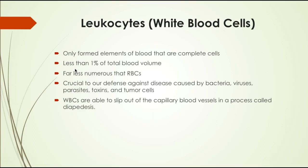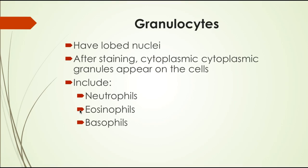Leukocytes are white blood cells — the only formed elements of blood considered to be complete cells. They make less than 1% of the total blood volume and are very important for defense against disease, bacteria, parasites, toxins, and tumor cells. Unlike other blood components, white blood cells can leave the bloodstream, travel to tissues in different parts of the body, and return. There are two categories: granulocytes, which have visible granules when stained, and agranulocytes, which appear smooth.